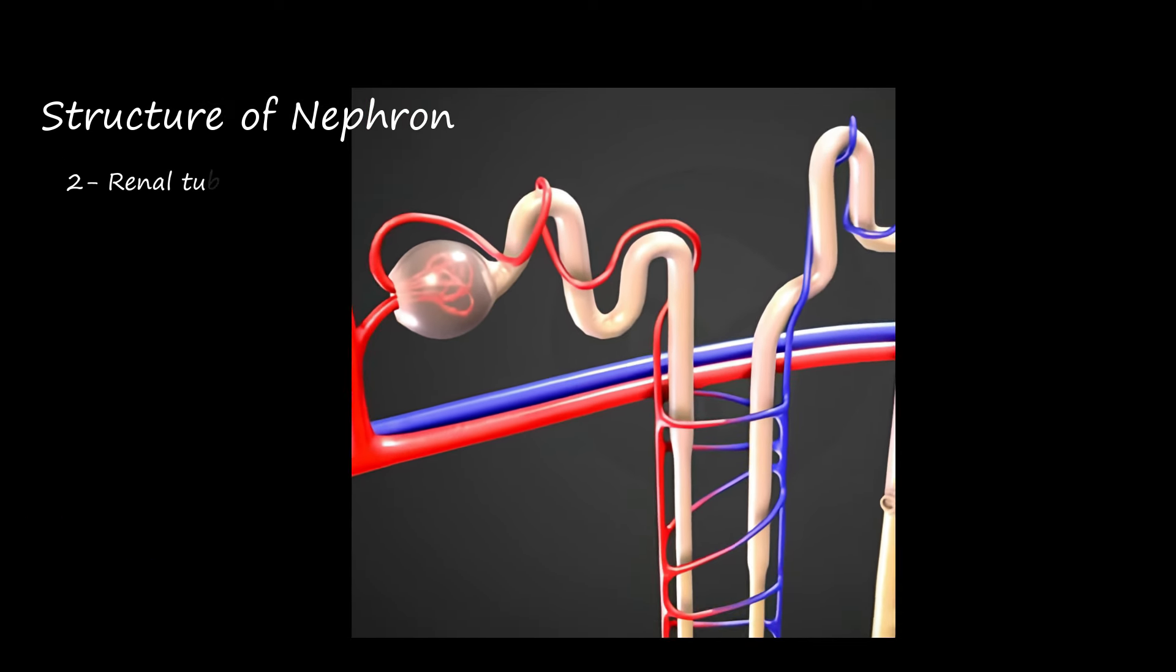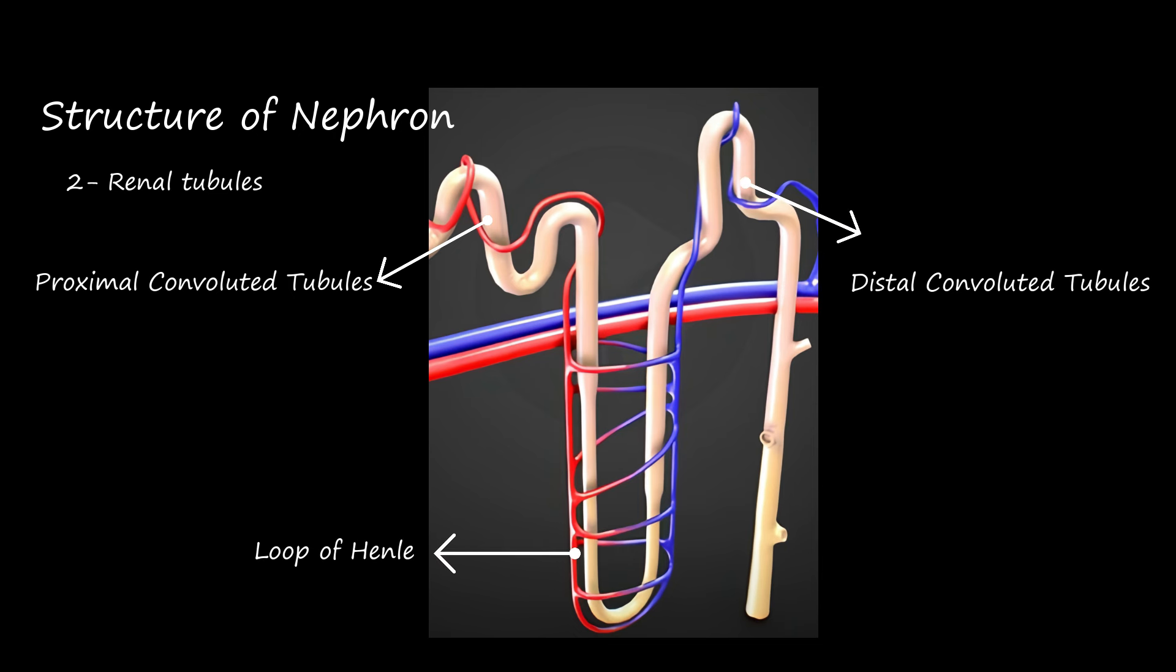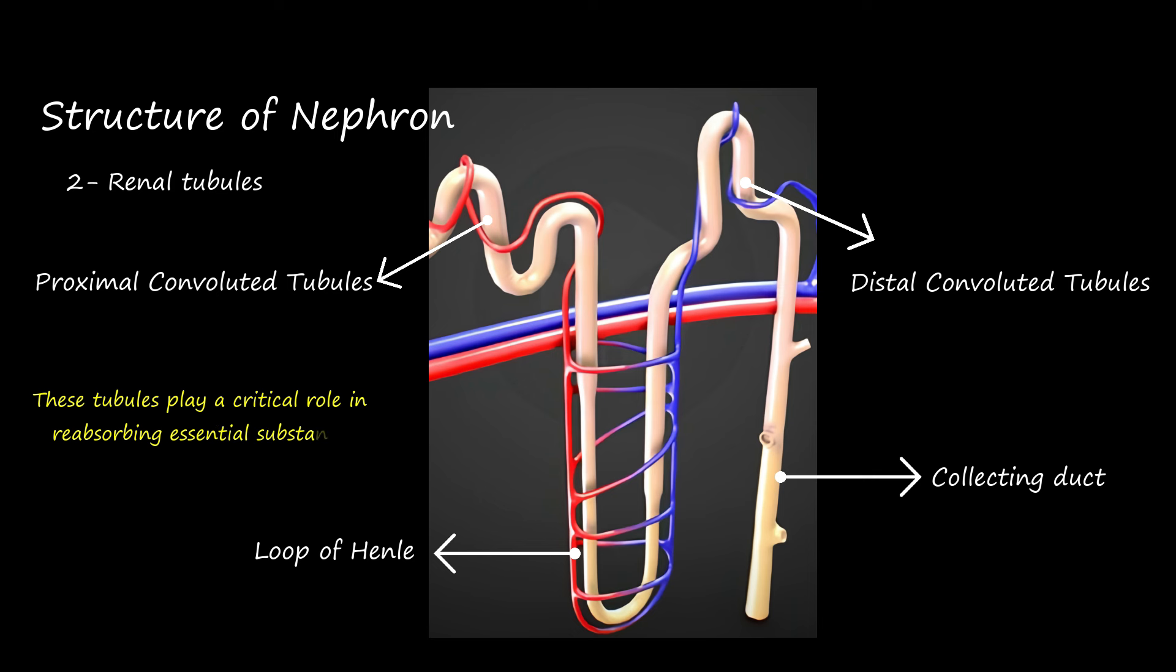Next, we have the renal tubules, comprising various segments like the proximal convoluted tubules, loop of Henle, distal convoluted tubules, and the collecting duct. These tubules play a critical role in reabsorbing essential substances like water and electrolytes, while disposing of waste products.